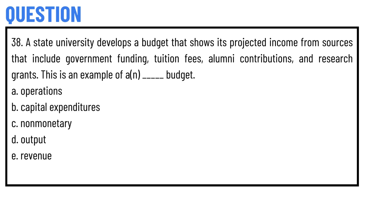Today's question is: a state university develops a budget that shows its projected income from sources that include government funding, tuition fees, alumni contributions, and research grants. This is an example of what type of budget? Option A: Operations. Option B: Capital Expenditures. Option C: Non-Monetary. Option D: Output. Option E: Revenue.